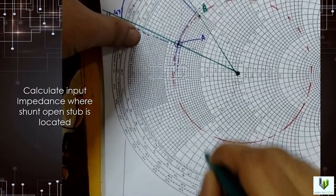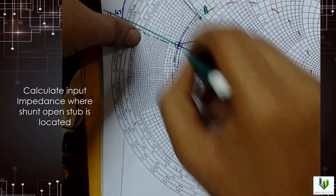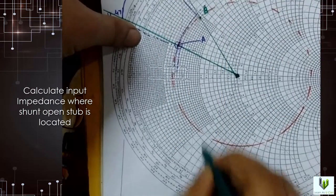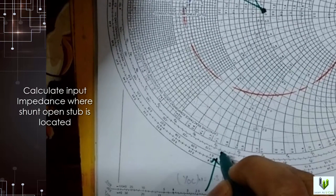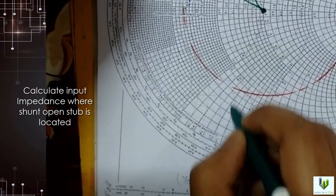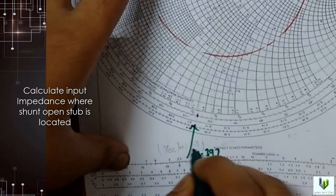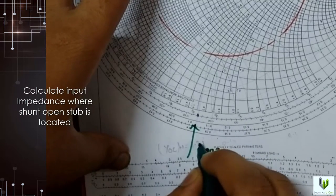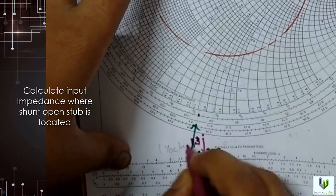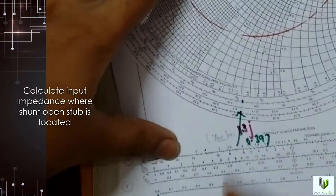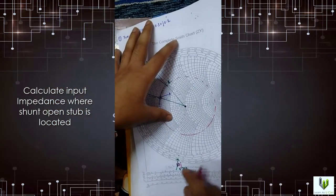Now just measure this value. This is 1.4. Use that Y chart, means that dotted line. The value is between 1.4 minus j1.4 and minus j1.2. So I have plotted here. Just extend, not need to extend. This is j1.3.